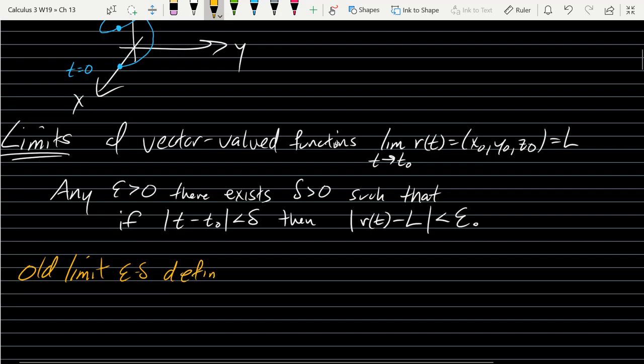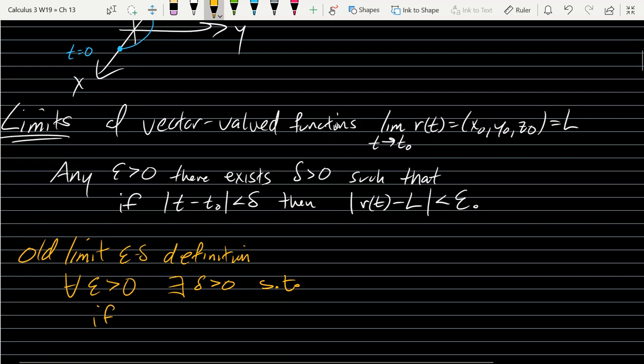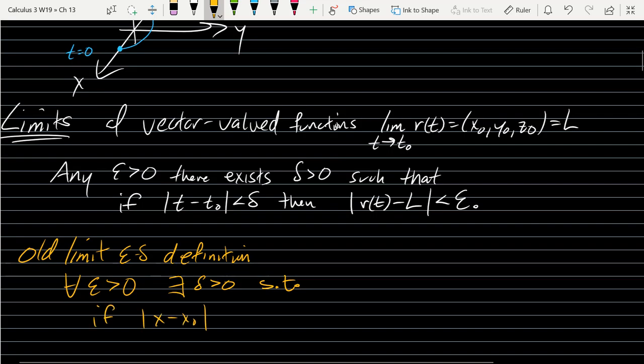I'm going to write down the good old days limit. This is the old epsilon delta definition that we all remember. It says any epsilon greater than zero, there exists delta greater than zero, such that if x minus x-naught less than delta...